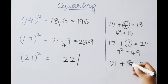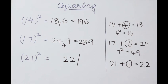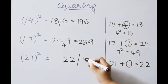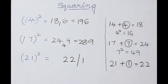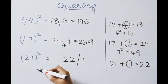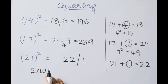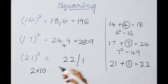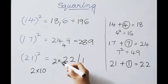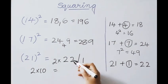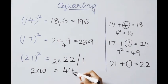Now for the second part, take the square of the excess value: 1 squared is 1. Write that down. Now, base 20 means 2 times 10, so we multiply the first part by 2. 2 times 22 gives 44, and we write down the second part answer as 1. So, 21 squared is 441.